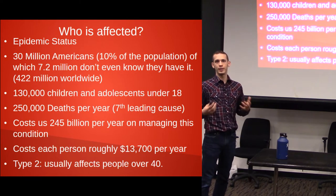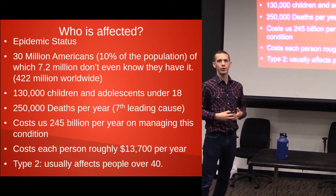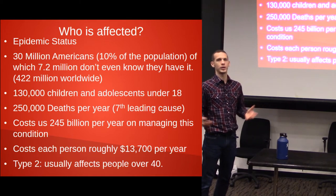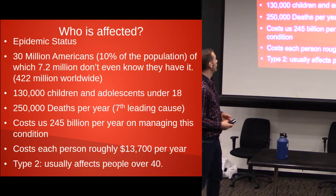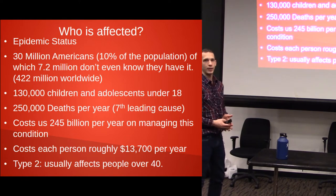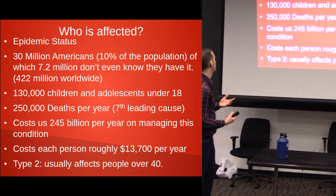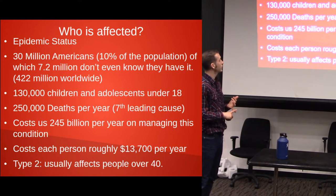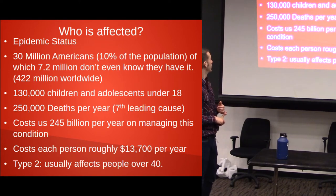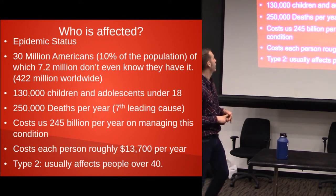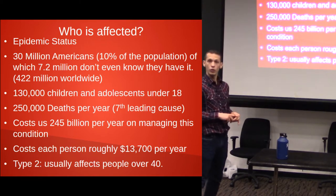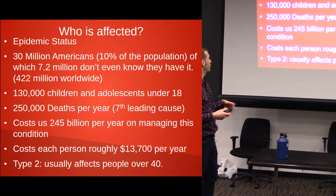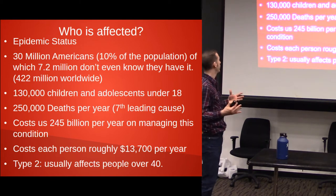I like to give a little bit of statistics on it. I'm going to try to go quick tonight because there's a lot of information to go over. So who is affected? At this point it's called epidemic status — a lot of people are affected. 30 million Americans, or 10% of the population, of which 7.2 million don't even know they have it. 422 million people worldwide, so obviously it's a very big problem.